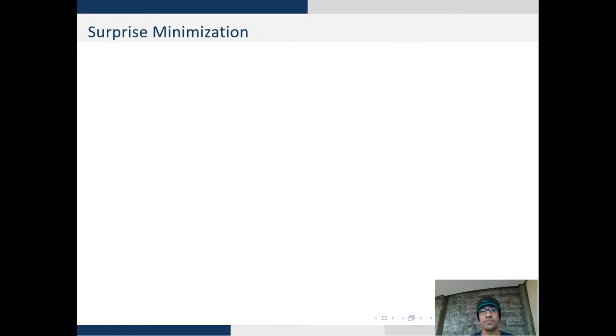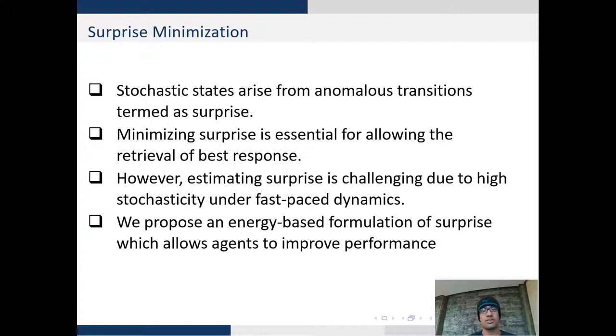So how do we address the stochastic dynamics in multi-agent reinforcement learning? To answer this question, we study surprise minimization. Stochastic states arise from anomalous transitions which can be termed as surprise. We need to minimize surprise to minimize stochasticity and retrieve the best response corresponding to each agent.